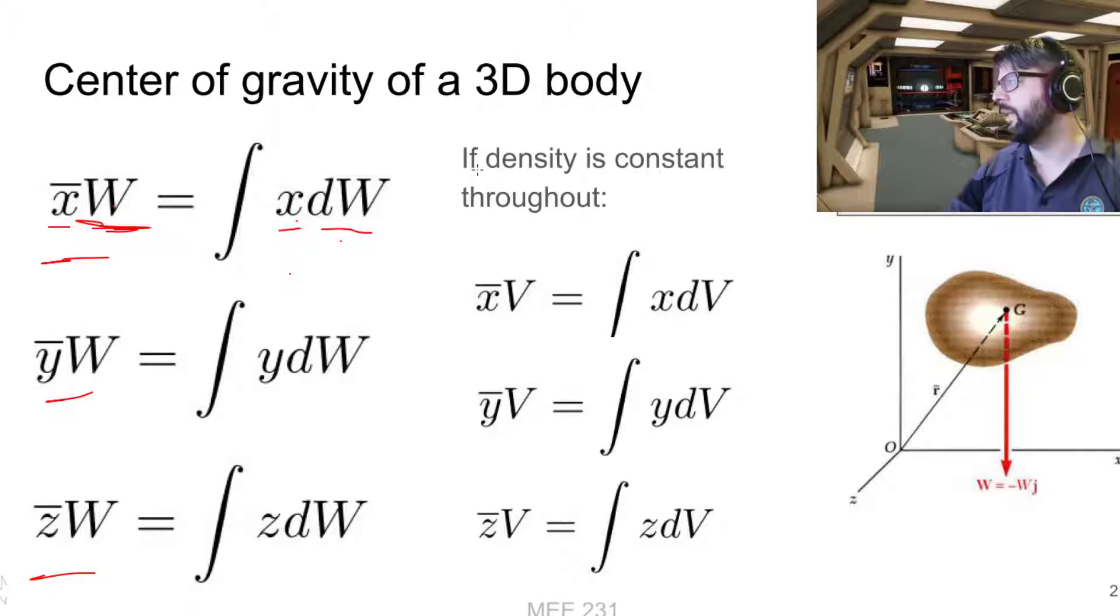And if density is constant throughout—so if we have a homogeneous material with no variations in its density, the same type of material, same density—then it works the same on a volumetric basis as well. We can just solve for the centroid of the volume instead of necessarily the center of mass. Those two things are equivalent as long as the density is constant throughout.